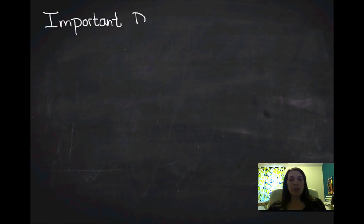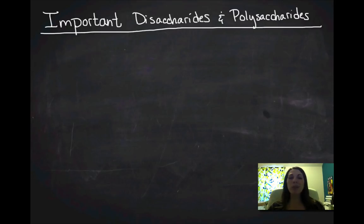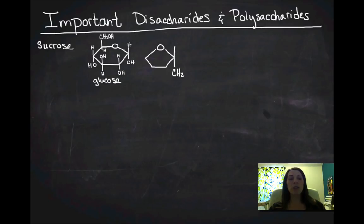So let's talk about some important disaccharides and polysaccharides. And when I say important disaccharides, we're really only going to talk about one important disaccharide, which is sucrose, because that's table sugar. There's a bunch of others that we'll talk about a little bit more when we get into fermentation. But really, I really care that you know sucrose. So sucrose is a disaccharide that is made up of glucose. And it is made up of fructose.